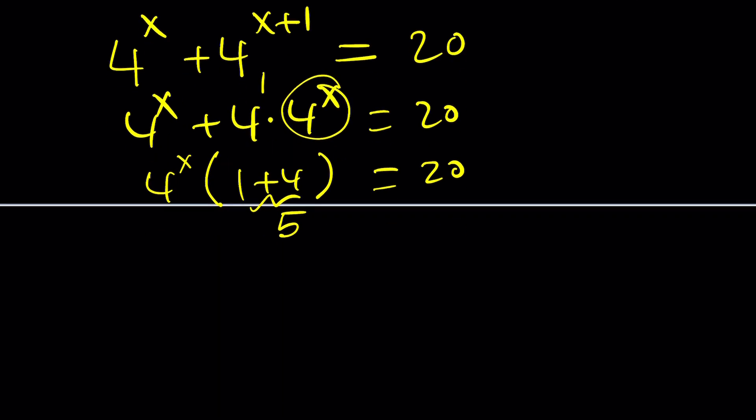If you divide both sides by 5 you get 4 to the power x equals 4, or you just think about it. What times 5 equals 20? The answer is 4, and from here it's clear that x is equal to 1, right? In a very easy scenario, okay?